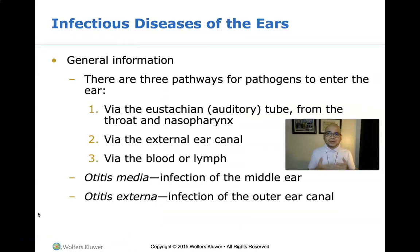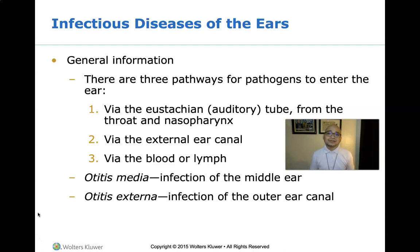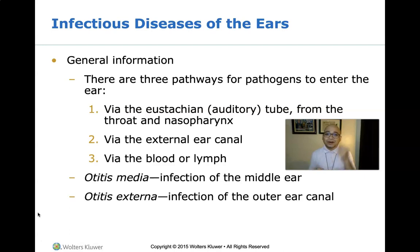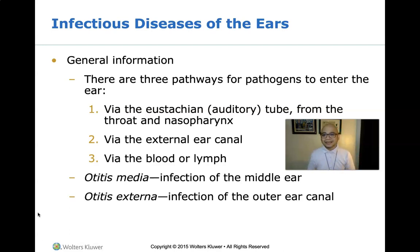We have given the overview of infectious diseases of the skin. Let us now talk about the overview of the infectious diseases of the ears. There are actually three pathways for pathogens to enter our ear. The first is through the Eustachian tube or auditory tube from the throat and nasopharynx.